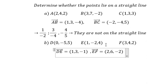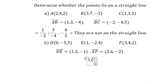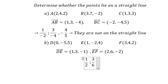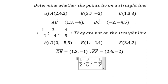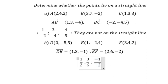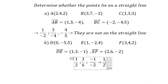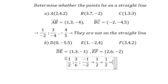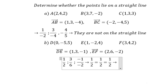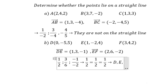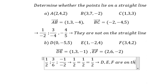So we have negative 1 divided by negative 2. If we simplify all the fractions, we can see that 1 over 2 equals 1 over 2 equals 1 over 2. So D, E, F are on the straight line.